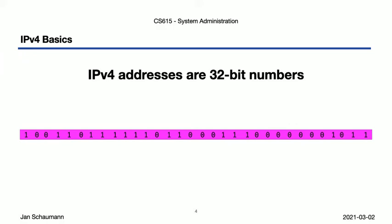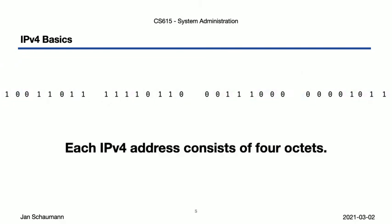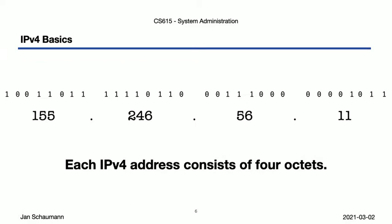Our IPv4 address is a 32-bit binary number, but a 32-bit binary number is somewhat unwieldy and hard to remember, which is why we commonly divide these 32 bits into 4 octets. Each of these octets is then represented with a decimal value and separated by a dot, leading to the common dotted decimal representation of the IP address — 155.246.56.11 in our example. We can also represent the octets in hex, as we've seen in the TCP dump hex output, where the destination address showed up as 9b.f6.38.0b.